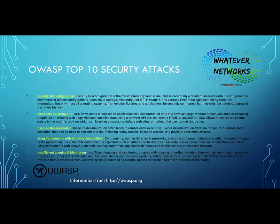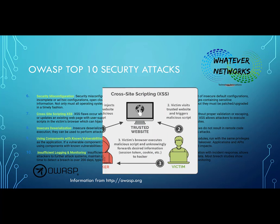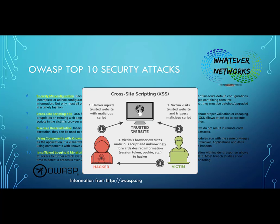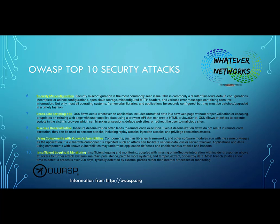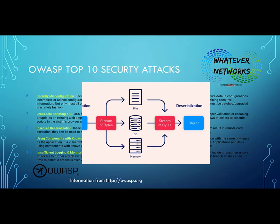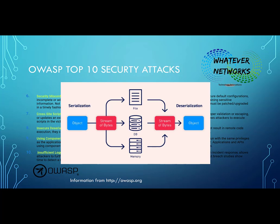Number seven is cross-site scripting. XSS flaws can occur whenever an application includes untrusted data in a web page without proper validation or escaping, or updates an existing web page with user-supplied data using a browser API that can create HTML or JavaScript. Cross-site scripting allows an attacker to execute scripts in a victim's browser, which can hijack a user session, deface a website, or redirect to a malicious website. Number eight, insecure deserialization, often leads to remote code execution, and can also be used to perform replay attacks, injection attacks, and privilege escalation attacks.